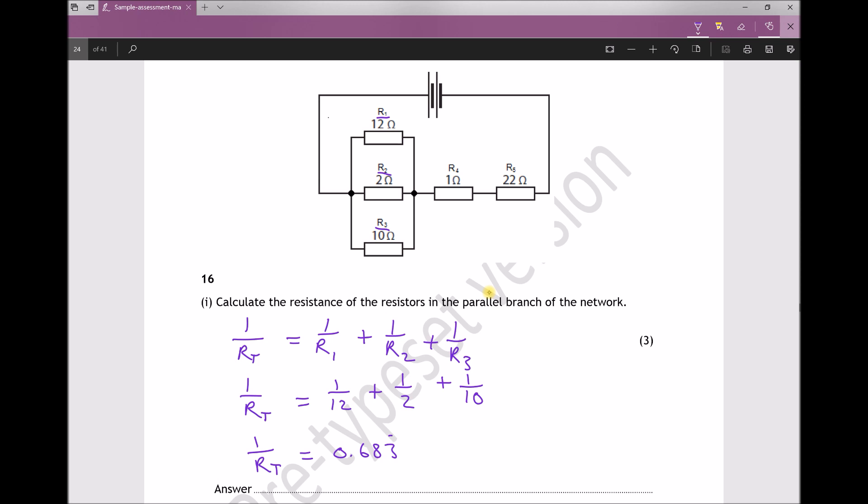Now what I'm going to do is keep that answer in the display of my calculator because what we've calculated there is 1 over RT, and we're not asked to calculate 1 over RT, we're trying to calculate RT which is going to be 1 over that answer. We're taking the reciprocal of each side.